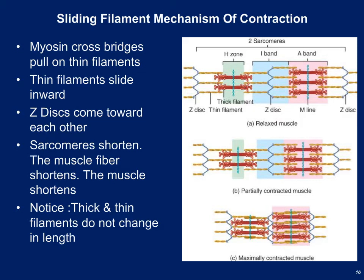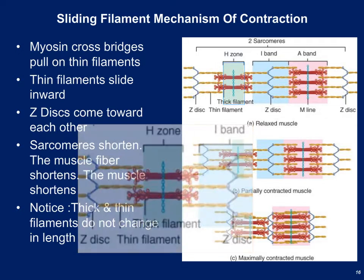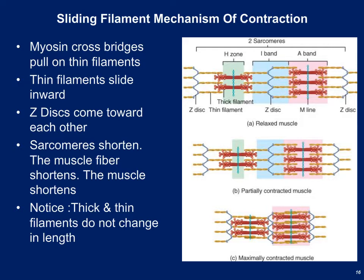The troponin and tropomyosin adjust their configuration depending on whether calcium is present. If no calcium is present, the binding sites on actin are blocked. However, when the sarcoplasmic reticulum releases calcium, it binds to troponin-tropomyosin, causing a shift that moves them out of the way and exposes the myosin binding sites on actin. Once that happens, myosin's golf club heads insert into the receptacles on actin, forming a crossbridge. Myosin then pulls the actin molecules towards it, drawing the edges of the sarcomere closer together — this is the sliding filament mechanism of contraction.